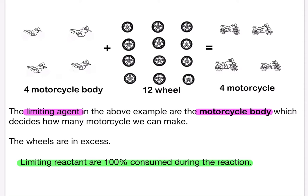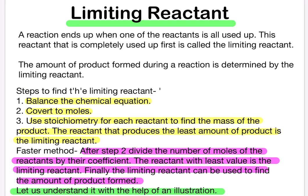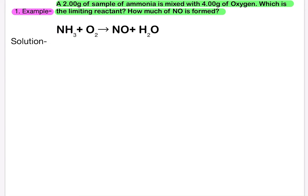Let's do one numerical to understand limiting reagent further using the faster method. The question is: 2.00 grams of ammonia is mixed with 4.00 grams of oxygen. Which is the limiting reactant — ammonia or oxygen — and how much NO is formed? The first step is to balance the equation, so let's write it down: NH3 + O2 → NO + H2O.